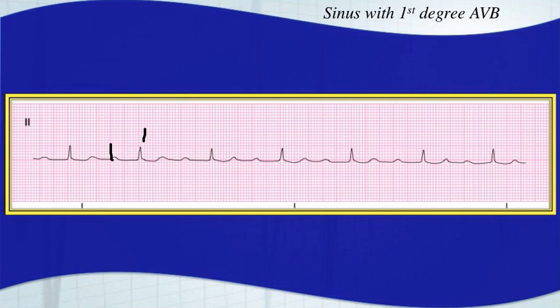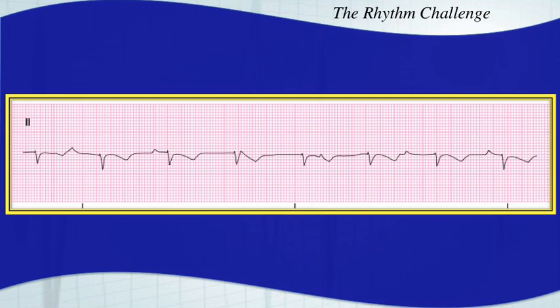Here's the next one. Hit pause and interpret this rhythm. This is a third degree AV block. It might be difficult to identify the P waves, but you can definitely see a P wave here and one here.